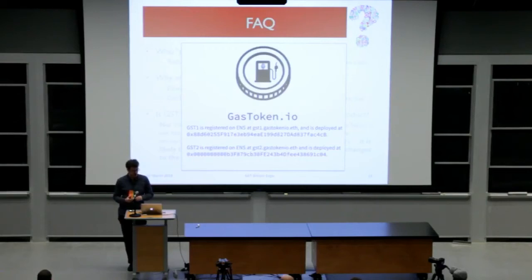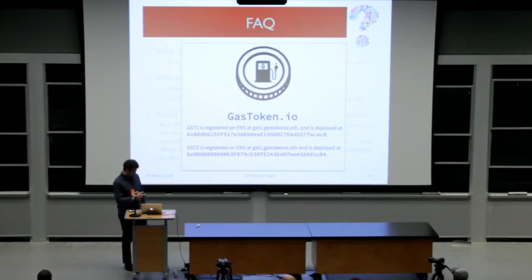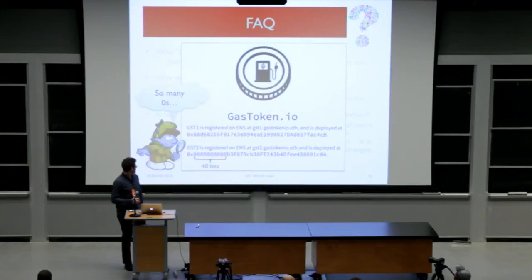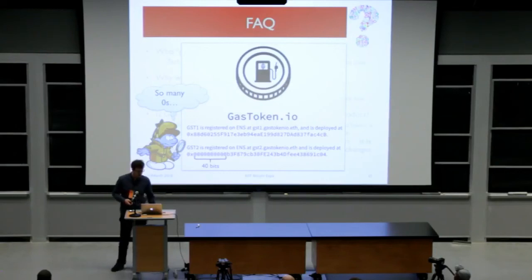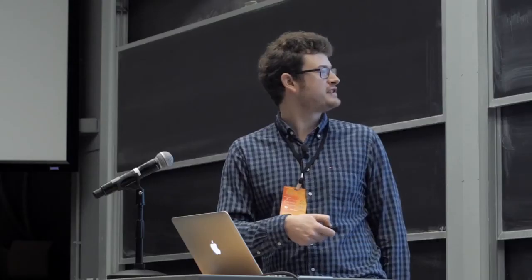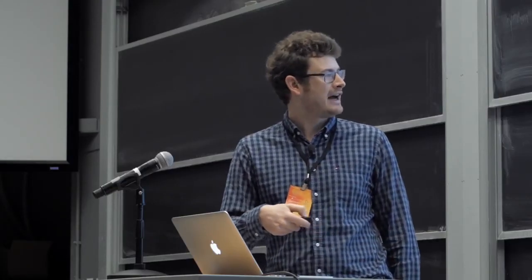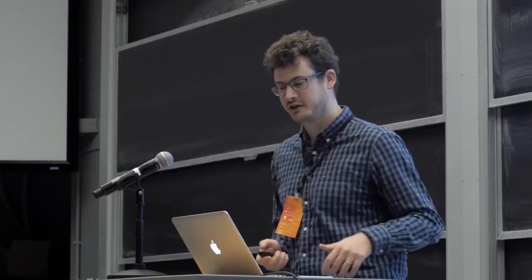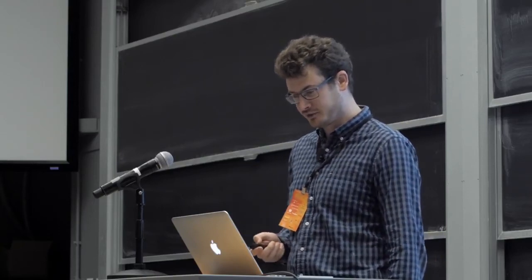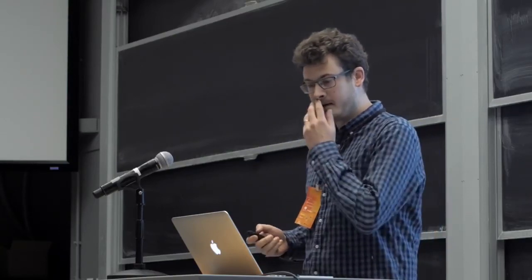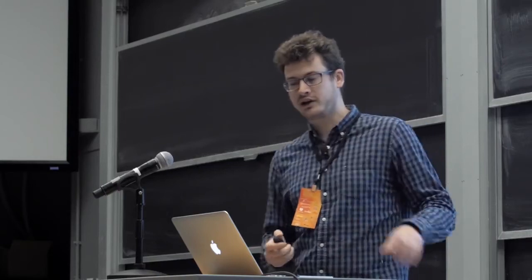The tokens are live and we have a website where you can learn more about how these things work. You'll notice that one of our contracts has a very special address that starts with a whole bunch of zeros - I think this is actually the most expensive address ever computed in Ethereum. You can read on our website about why we did this and how expensive it actually was.